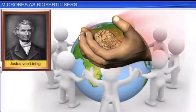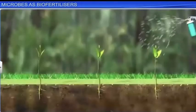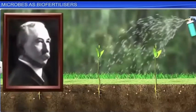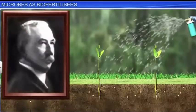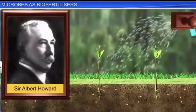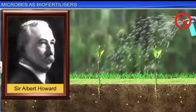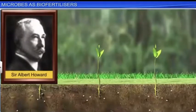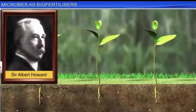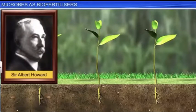Around the early 20th century, a British scientist, Sir Albert Howard, objected to the addition of chemicals to agricultural soil. He insisted that it was the health of the soil that determined the growth of plants. However, in his lifetime, he was ridiculed for his beliefs.